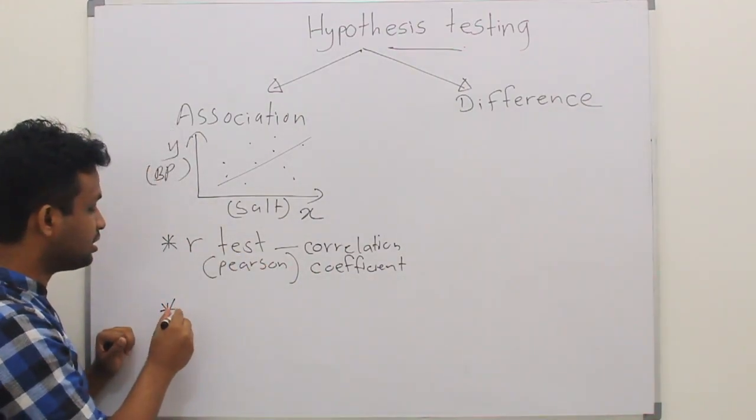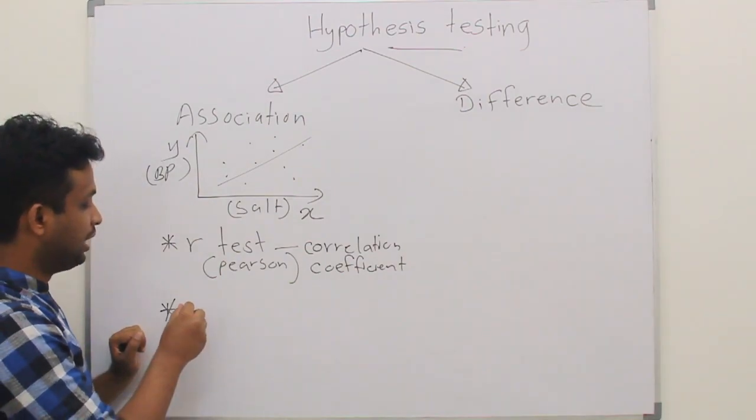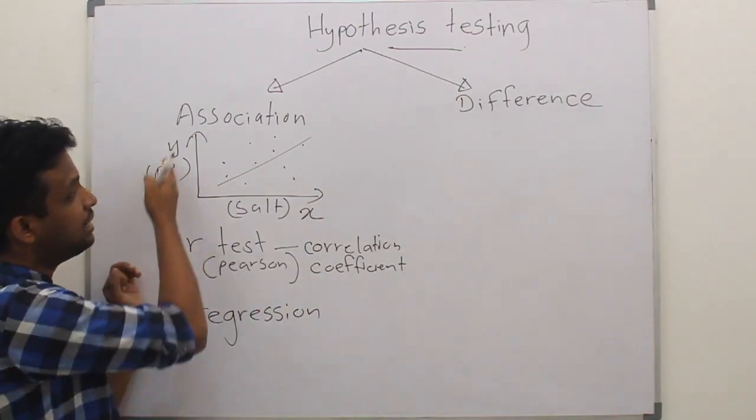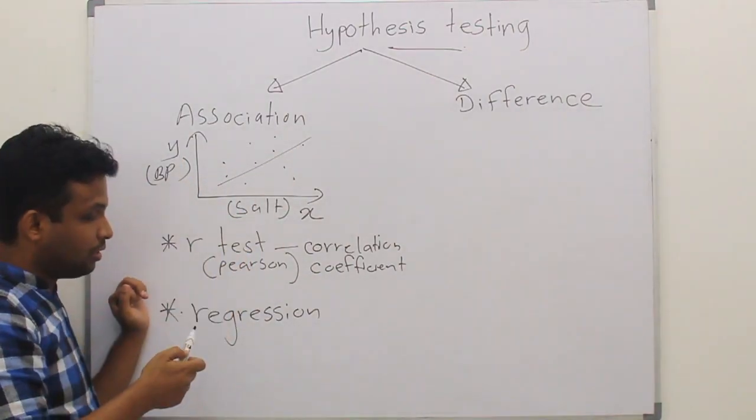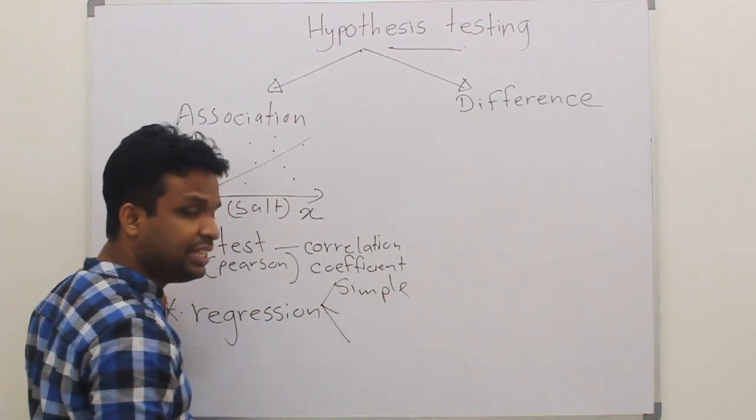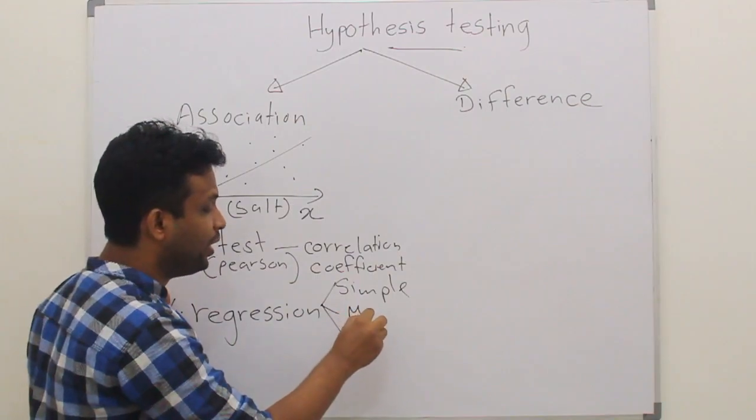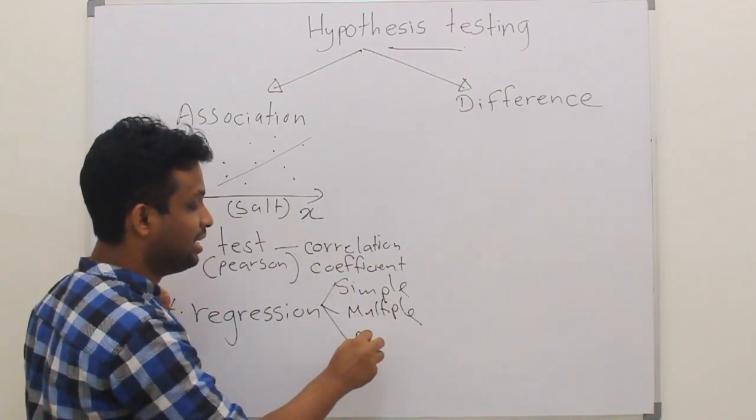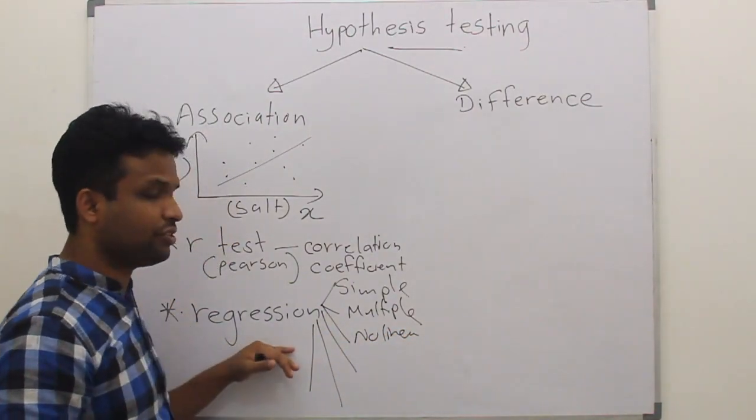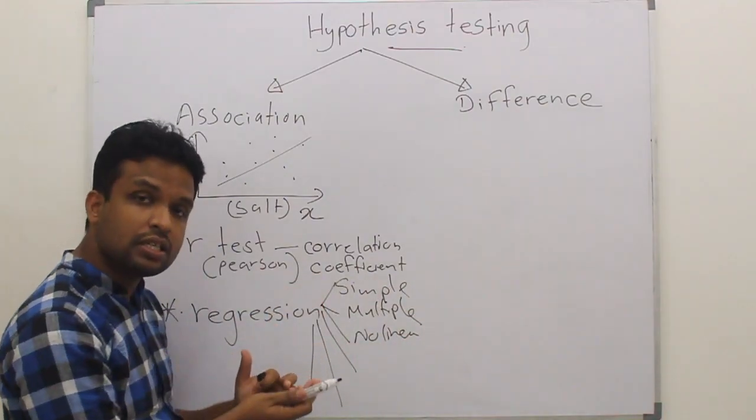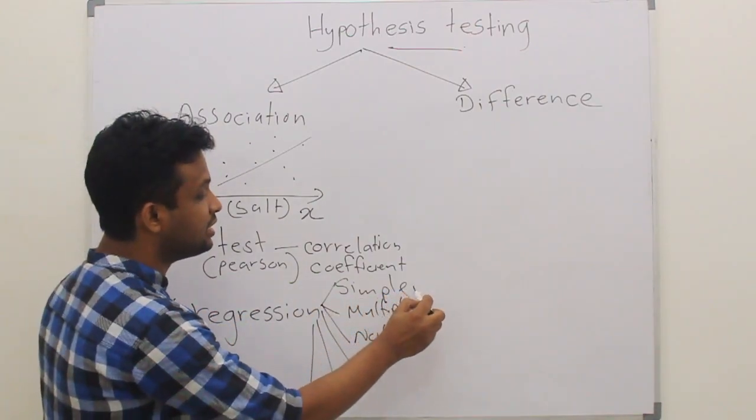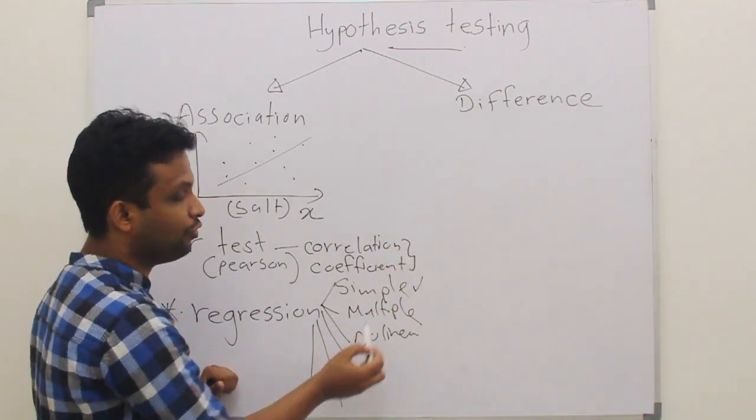Another method, statistical method that we can use is regression. Regression is also used to test this kind of hypothesis. There are so many regression techniques, like simple linear regression, multiple linear regression, non-linear regression. We will be discussing most of these things in separate lectures. But under basic statistics, we will be discussing the simple linear regression and correlation coefficient.